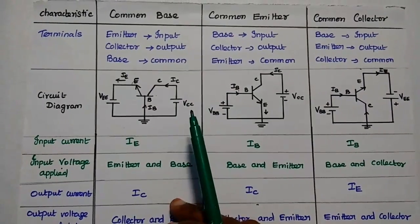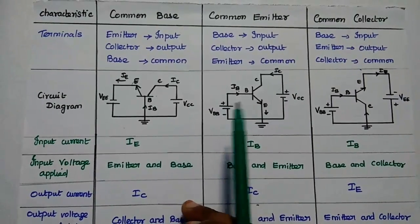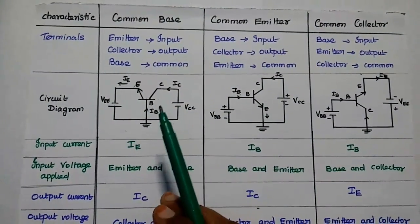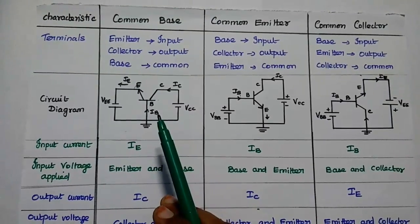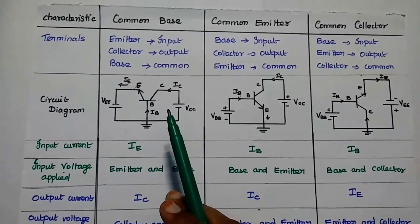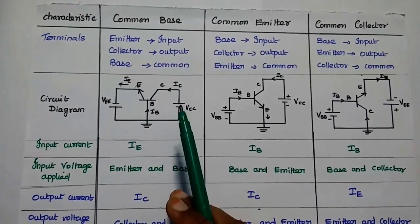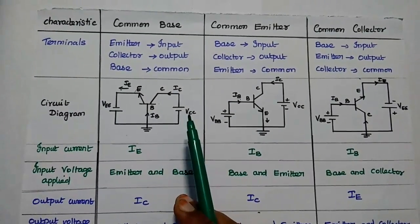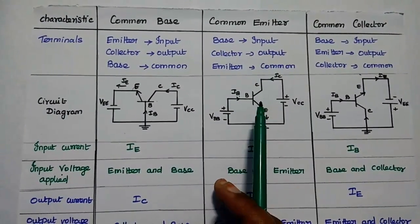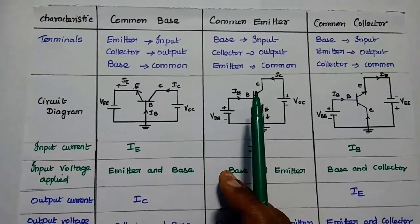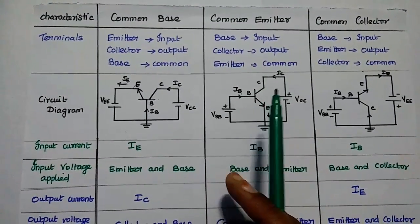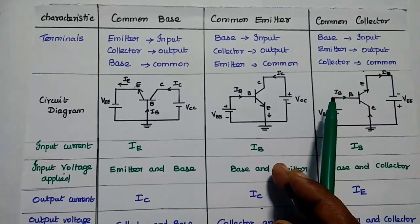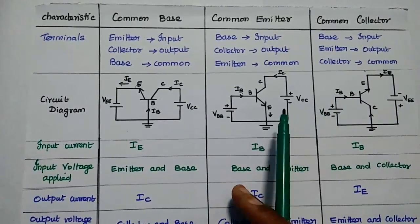Let's compare common base, common emitter, and common collector configurations. For common base configuration, the emitter terminal acts as the input terminal, collector is the output terminal, and base is common to both input and output. For common emitter, base is the input, collector is the output, and emitter is the common terminal. For common collector, base is the input, emitter is the output, and collector is the common terminal.